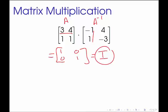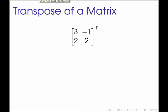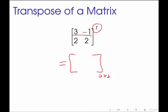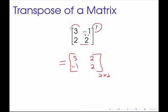We've covered scalar multiplication, addition and subtraction — both straightforward — and matrix multiplication, which is not what you would have guessed. The last operation is the transpose of a matrix. The transpose takes the rows and turns them into the columns. We use the superscript T as notation. The transpose of a two-by-two matrix is again a two-by-two: take the first row and make it the first column of the transpose, and take the second row and make it the second column.